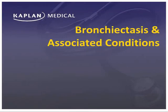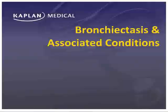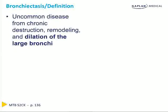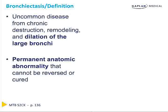In this next lecture, we're going to discuss a condition called bronchiectasis and some of its associated conditions. Bronchiectasis is defined as a disease of chronic destruction, remodeling, and dilation of the large bronchi in the lung. While quite uncommon, it is a permanent anatomic abnormality that cannot be reversed or cured; therefore, delaying its progression is of utmost importance.